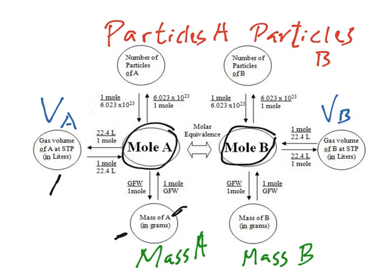What you have to know about this diagram is that you have to follow the arrows. So if you want to go from the volume, you have to go through mole A, then through mass of A. You don't go from volume to mass, or from volume to particles, or from volume of A to volume of B directly. You have to go through the mole. You always have to go through the mole.